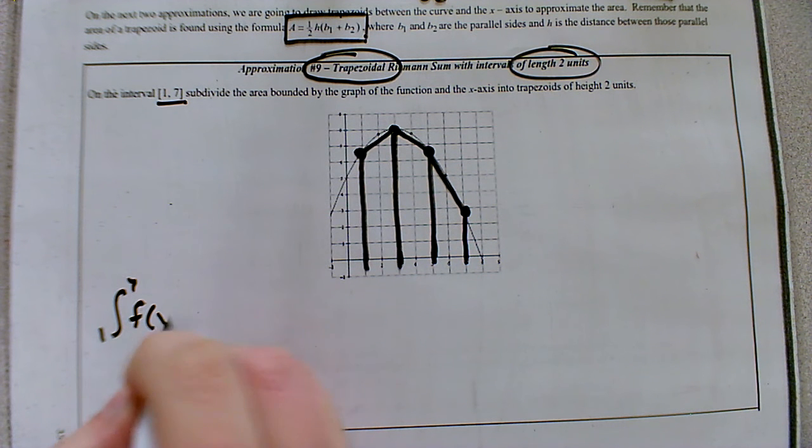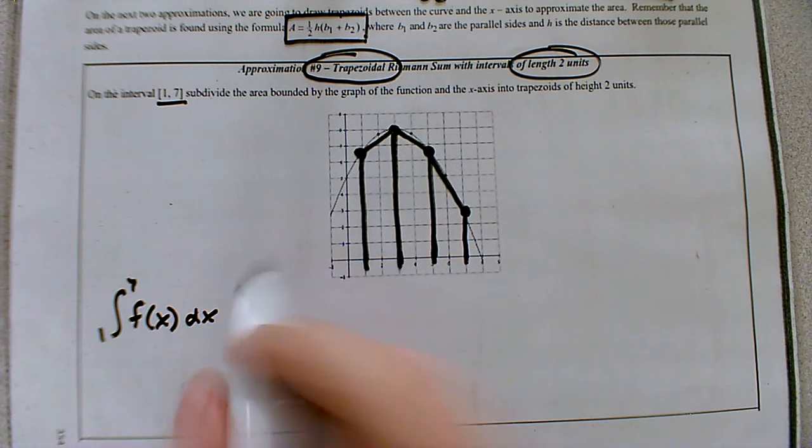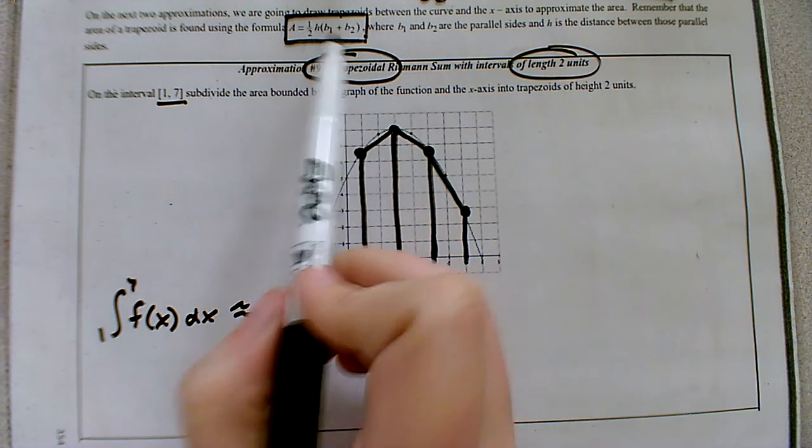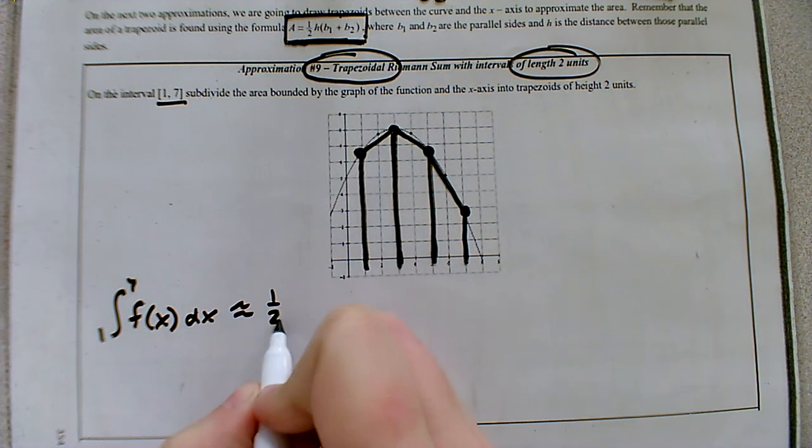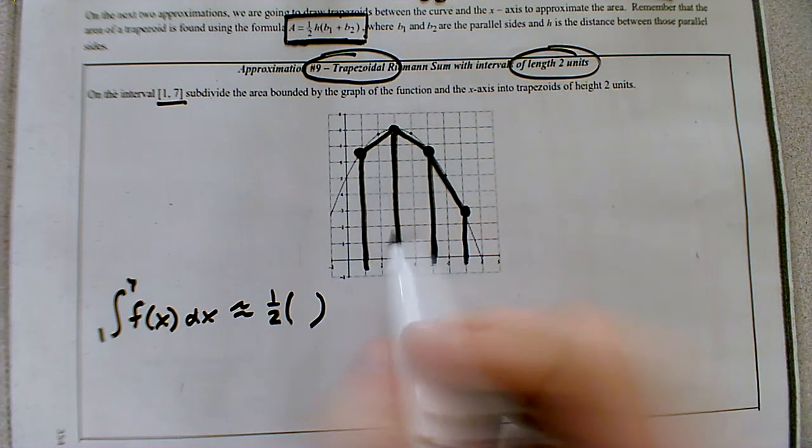All right, so the integral, aka area under the f of x curve dx, is approximately—now when we start to calculate the area, we're going to use the area formula for each trapezoid. So for the first trapezoid, I need one half times the height.